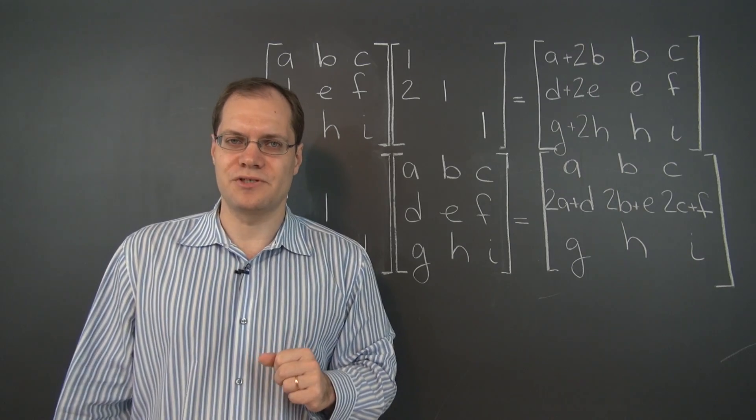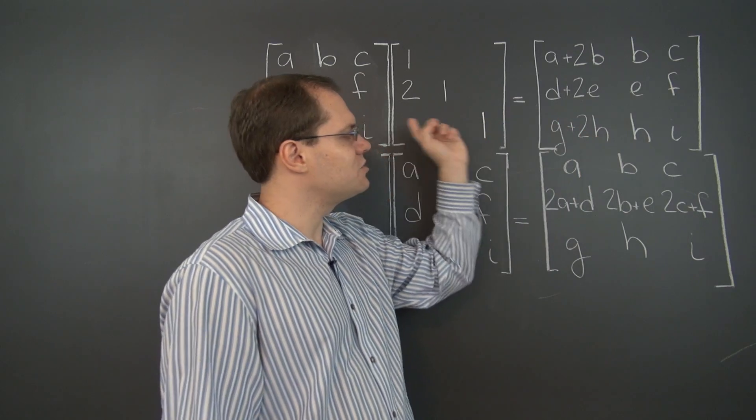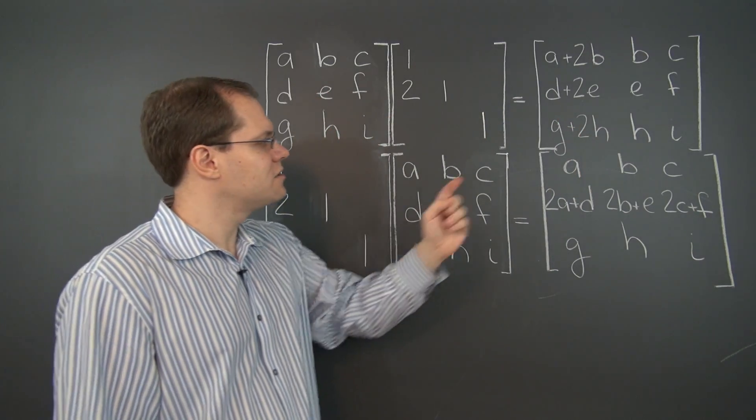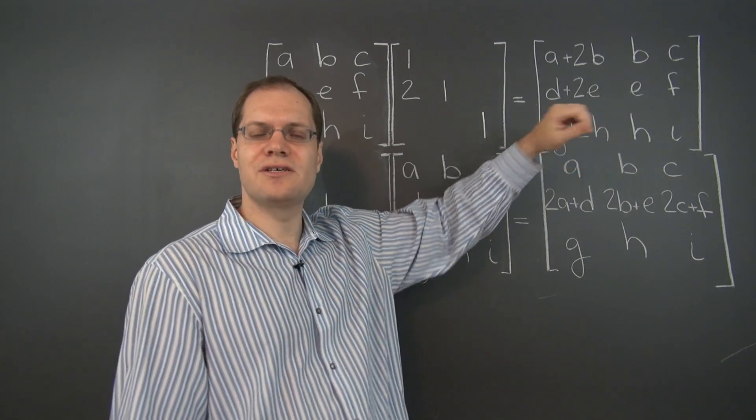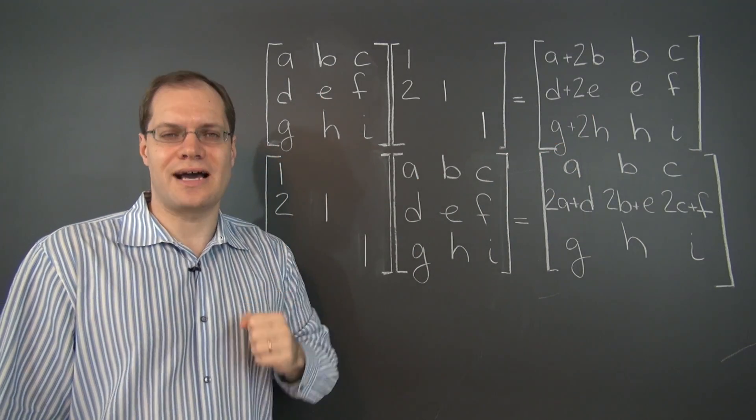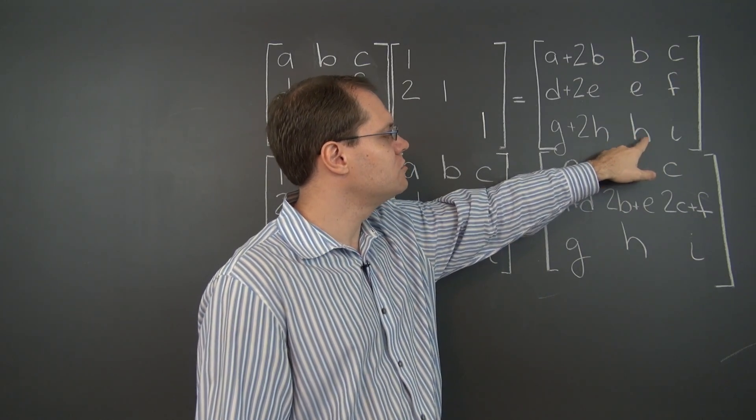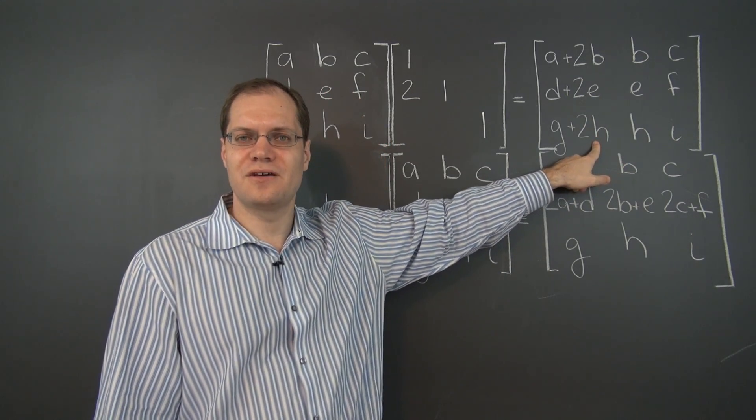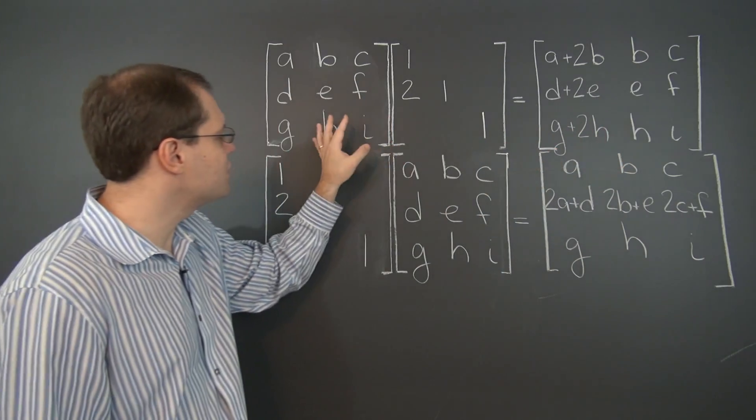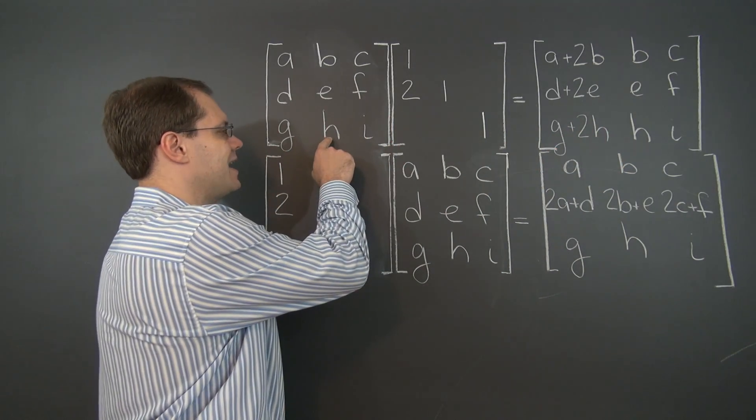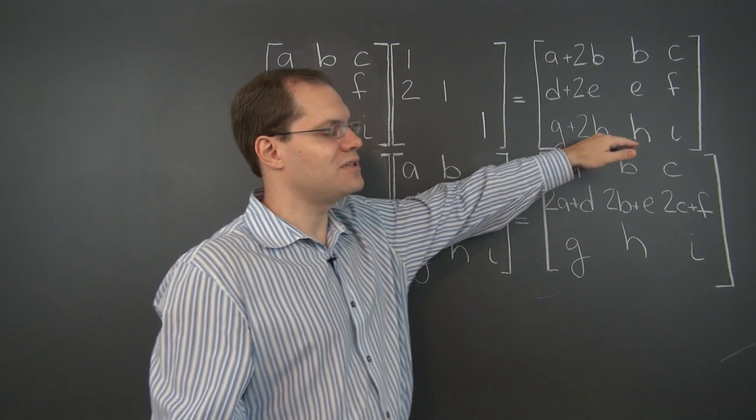All right, so those are the basic observations, but can we make them specific? What, this did something to the columns of the matrix on the left, but what specifically did it do? Well, I think by looking at this matrix, it's very easy to answer that question. And that answer is, add 2 of column 2 to column 1. Let's repeat that, add 2 of column 2 to column 1. If you look at this matrix and mentally add 2 of column 2 to column 1, you will get this matrix.